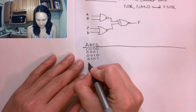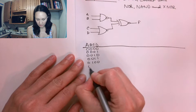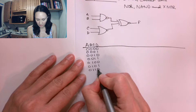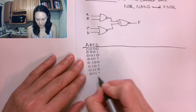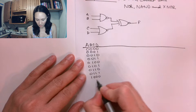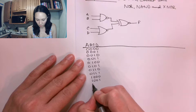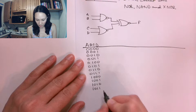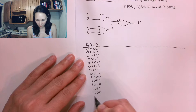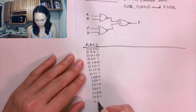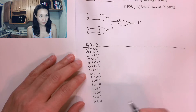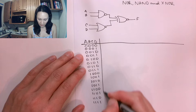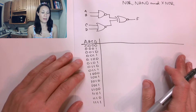0011, 0100, 0101, 0110, 0111, 1000, 1001, 1010, 1011, 1100, 1101, 1110, 1111. So those are all of our possible inputs for our truth table.